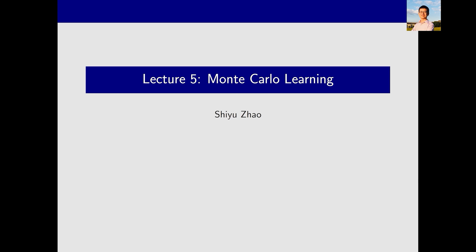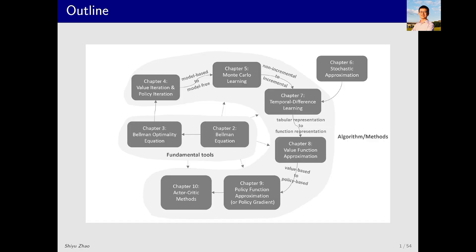Hello everyone, welcome back to my reinforcement learning course. This is our fifth lecture. Today I will introduce Monte Carlo Learning. This is the map of our course, and we are currently here. In the previous lecture we discussed value iteration and policy iteration. The previous one requires the system model. This time we'll study model-free methods for the first time in this course.